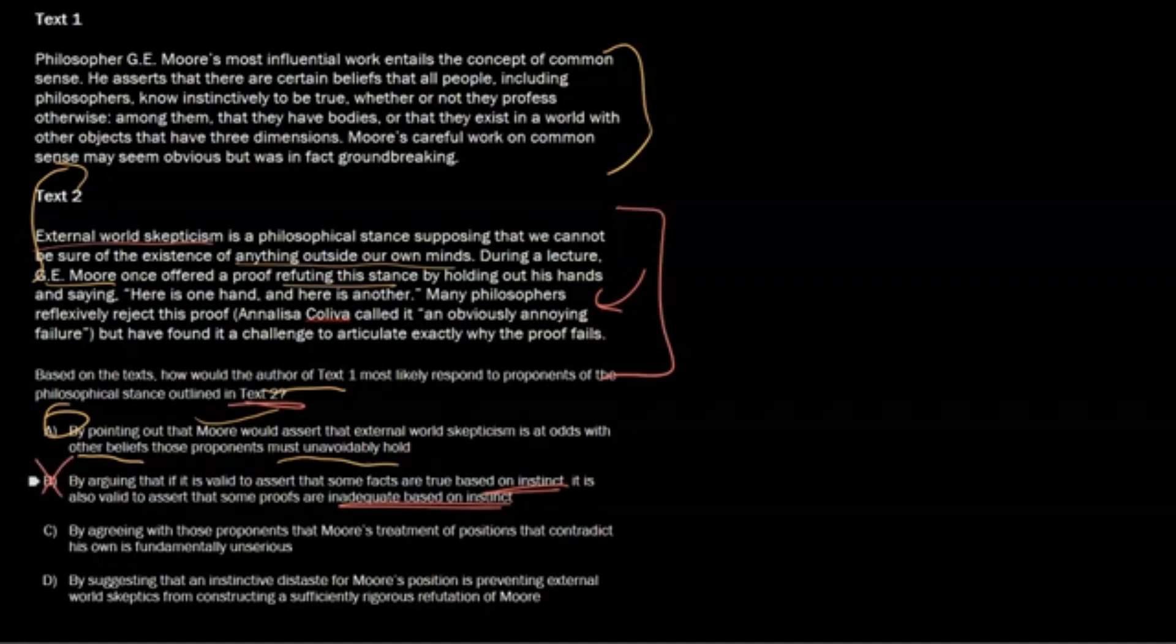Now, choice C: by agreeing—he's not going to agree. We can just take this out right here. By agreeing that proponents that contradict his own is fundamentally unserious. That's not how somebody's going to argue. They're not going to say, oh, you're silly. So this is not the right answer.